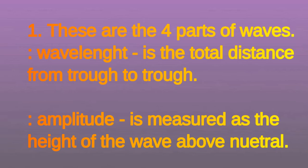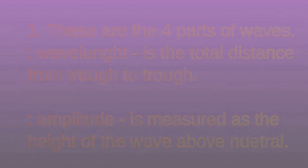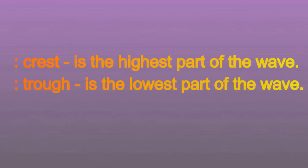One: These are the four parts of waves. Wavelength is the total distance from crest to crest. Amplitude is the highest part of the wave. Trough is the lowest part of the wave.